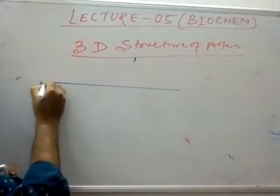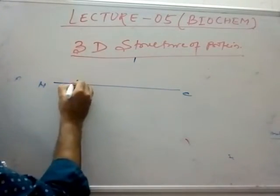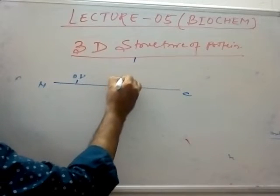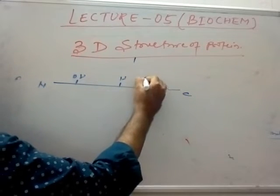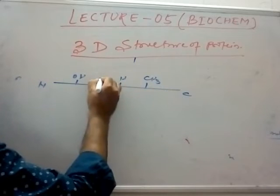There are certain amino acids such as CH3 side chains at the N-terminus and C-terminus. Some amino acids like alanine are hydrophobic, while others like serine are hydrophilic.